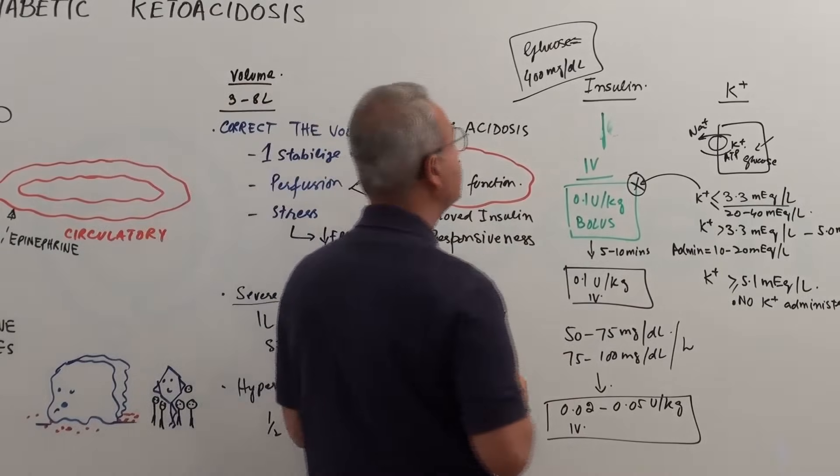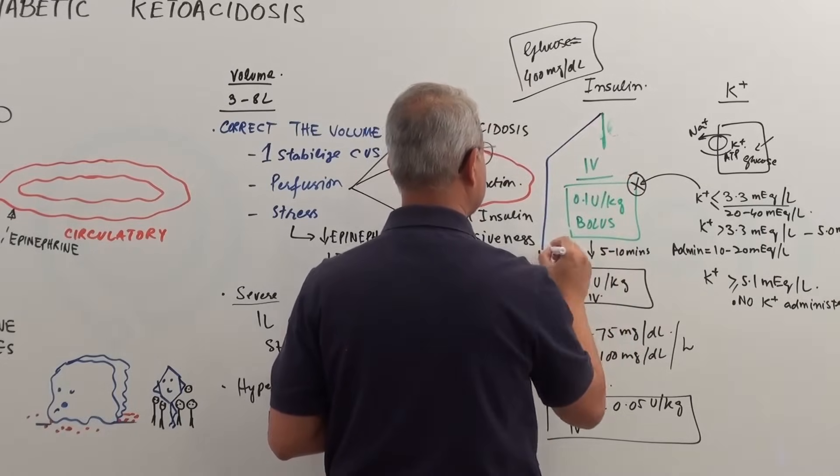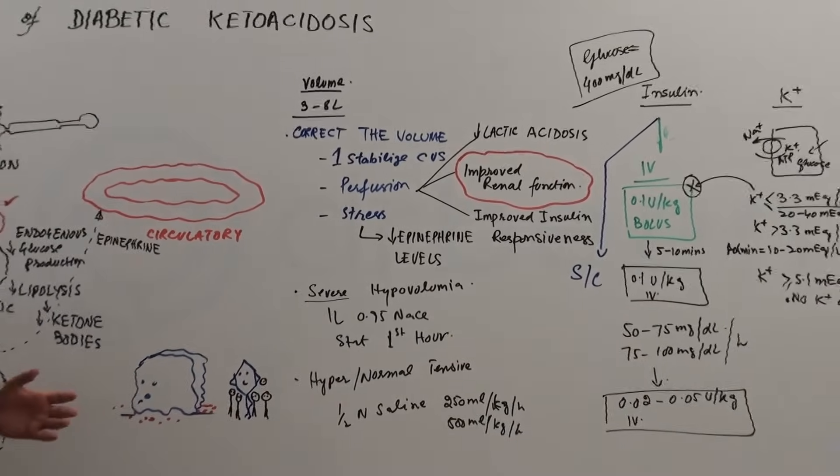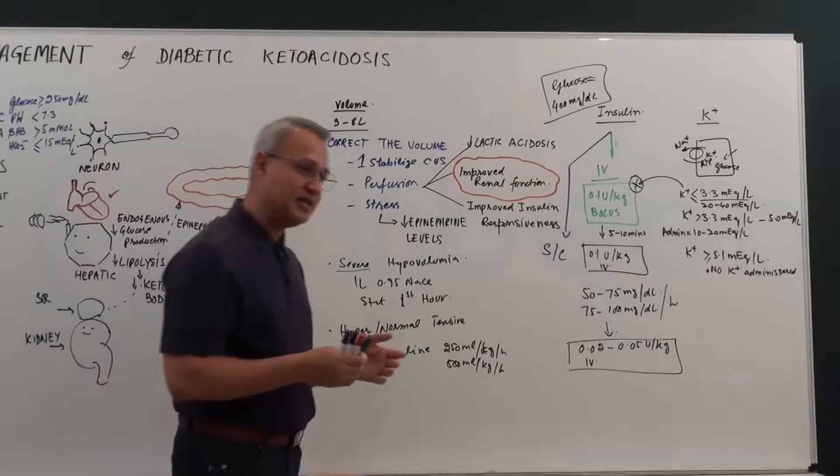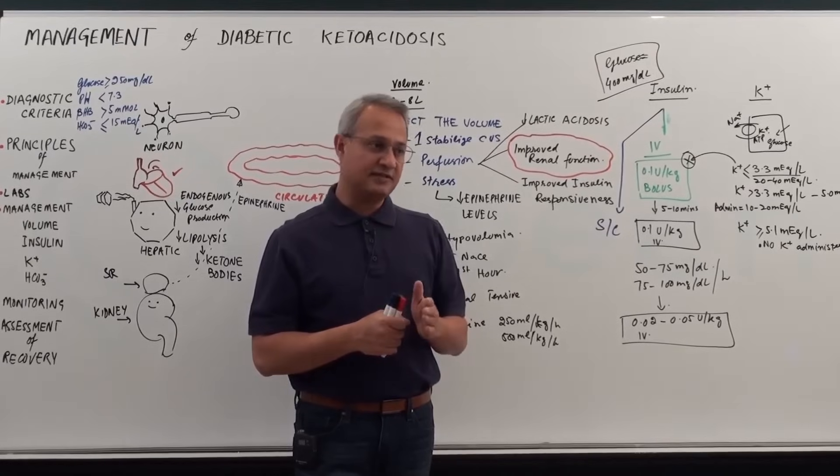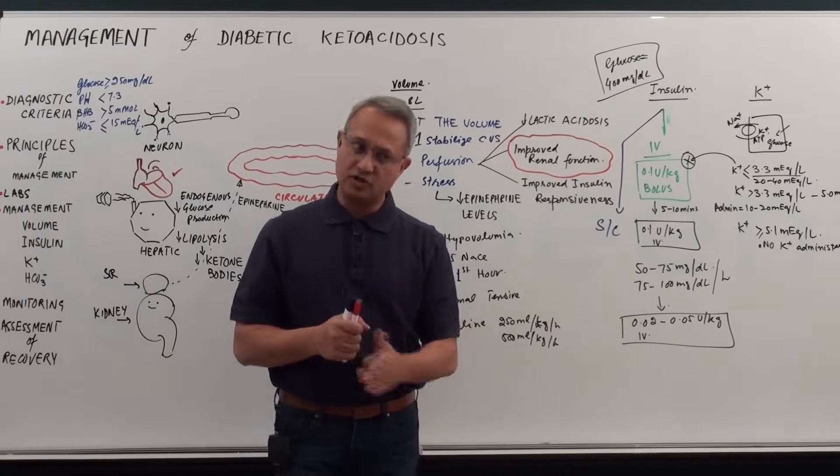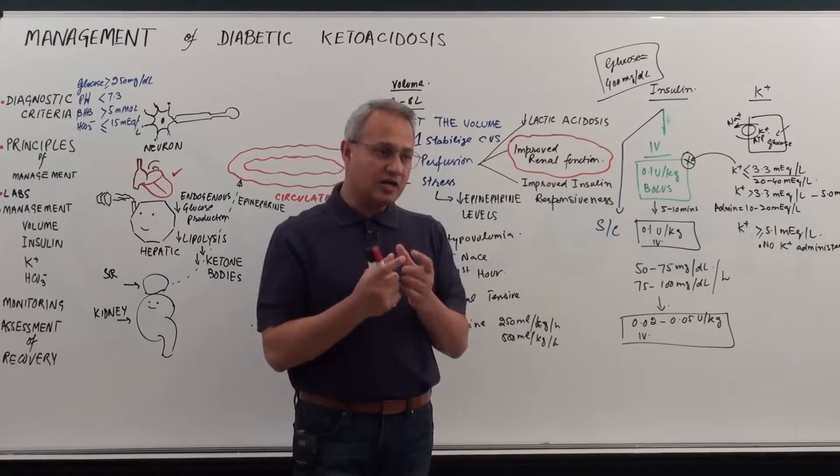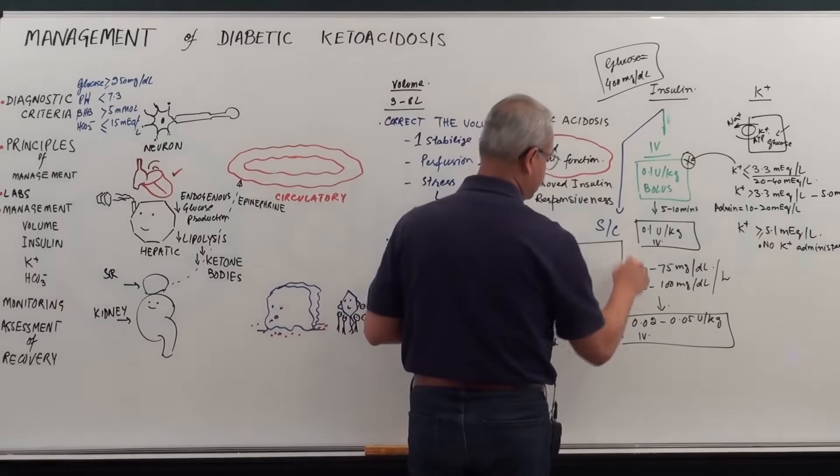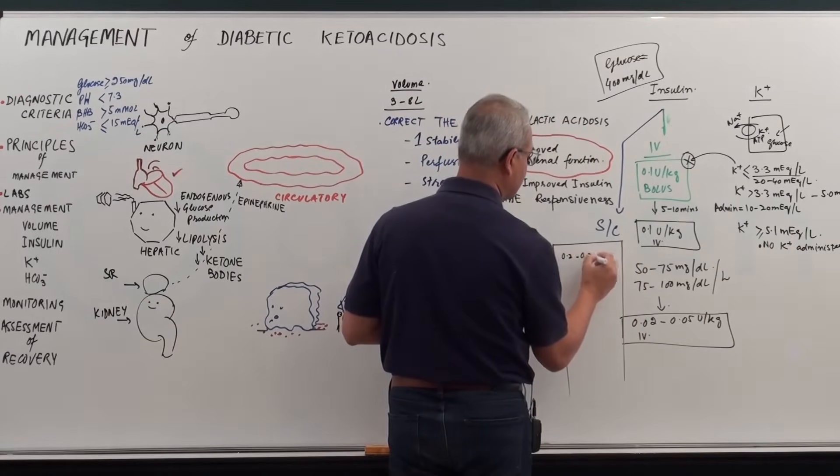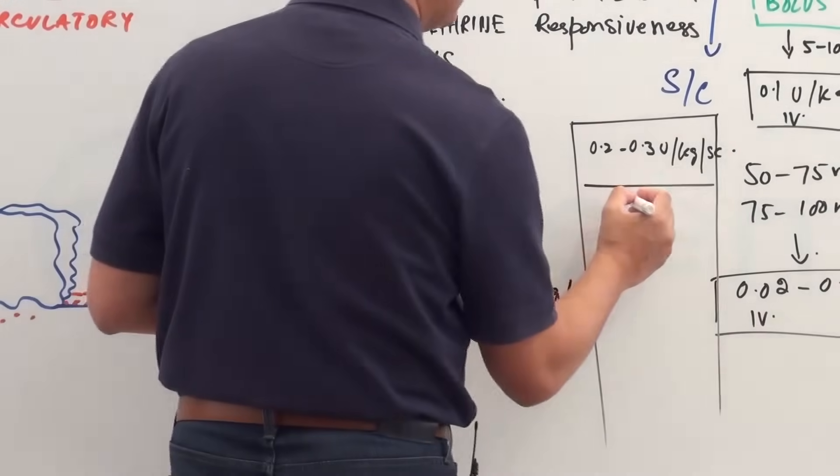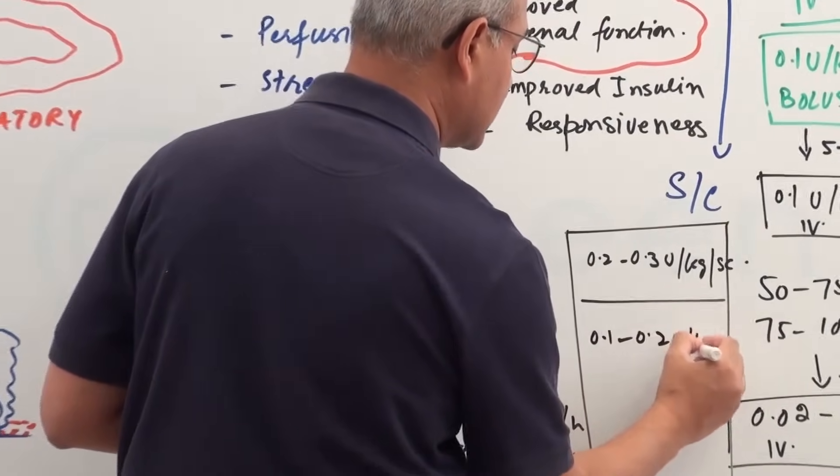If you are giving subcutaneous insulin, which can happen when patient has uncomplicated DKA. Uncomplicated DKA means patient doesn't have severe hypovolemia, patient doesn't have severe hypokalemia, bicarb levels are not too down. So patient is rather stable. When you have uncomplicated DKA, then you can actually give subcutaneous insulin as well. For subcutaneous, you start with 0.2 to 0.3 units per kilogram subcutaneous. Then you drop it down after an hour to 0.1 to 0.2 units per kilogram subcutaneous.